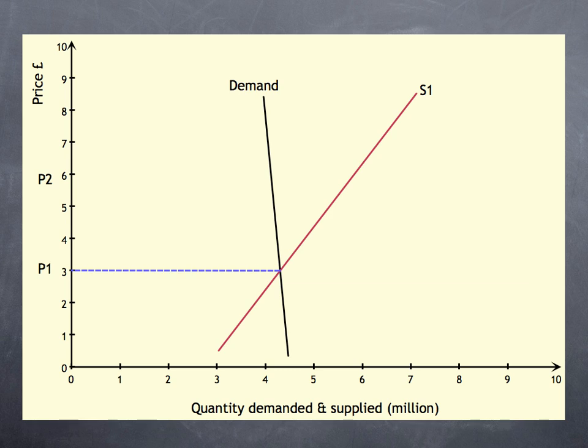This time, demand has shown much steeper to reflect the price inelasticity. Supply has been left the same, and we start off at the same position, where price is £3 and quantity supplied and demanded is 4 million.